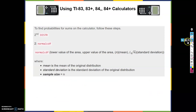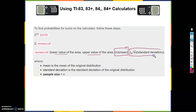For the calculator we're going to use normalcdf and inverse normal again. normalcdf takes lower and upper bounds, where the mean is now n times the original mean and the standard deviation is now the square root of n times the original standard deviation. That's how we set up the calculator for the sample distribution of sums.